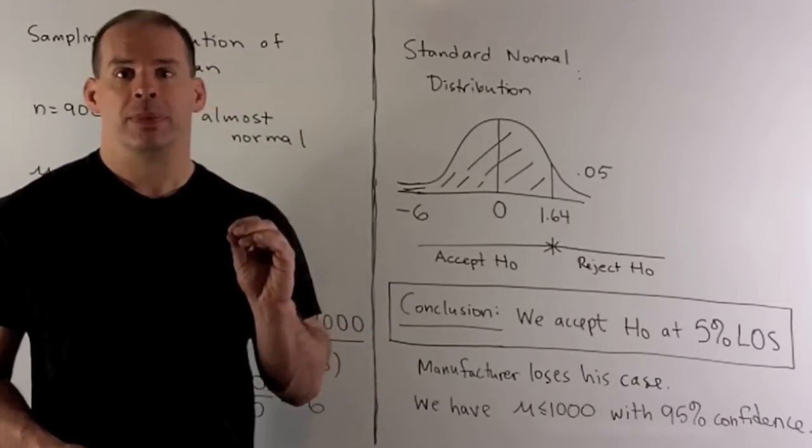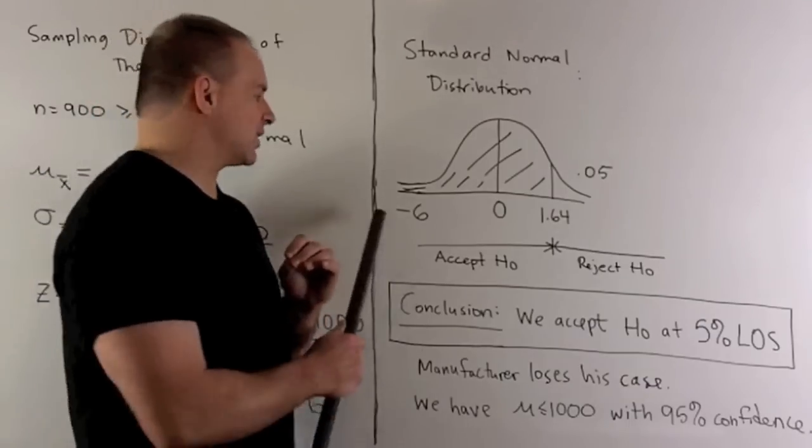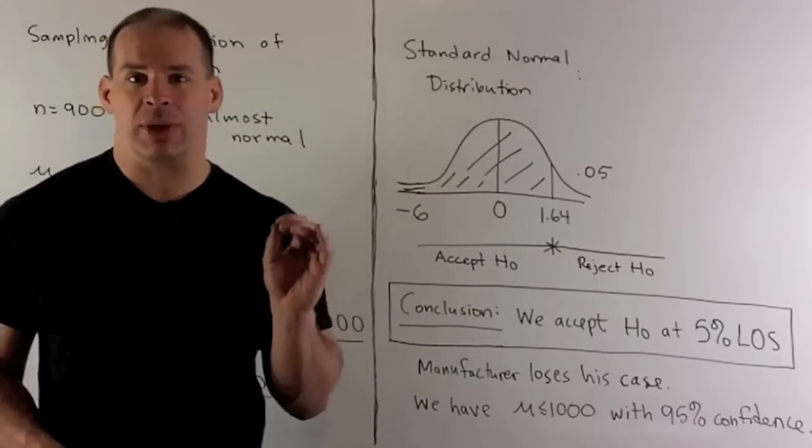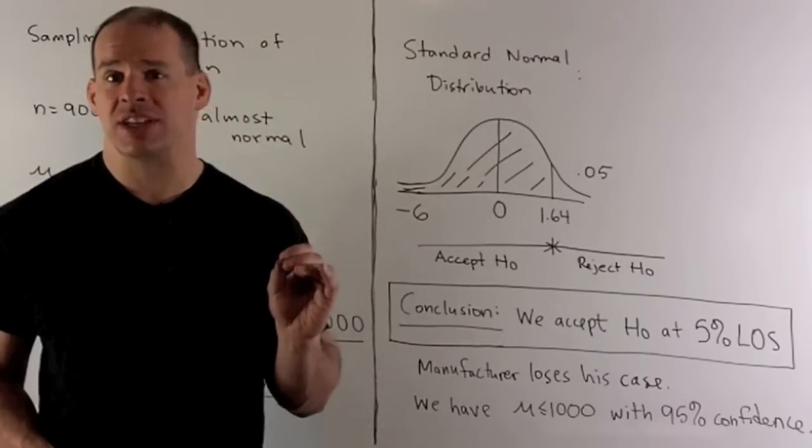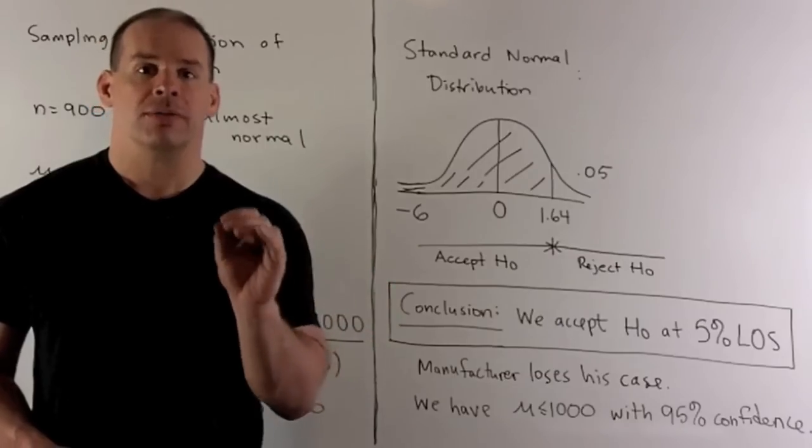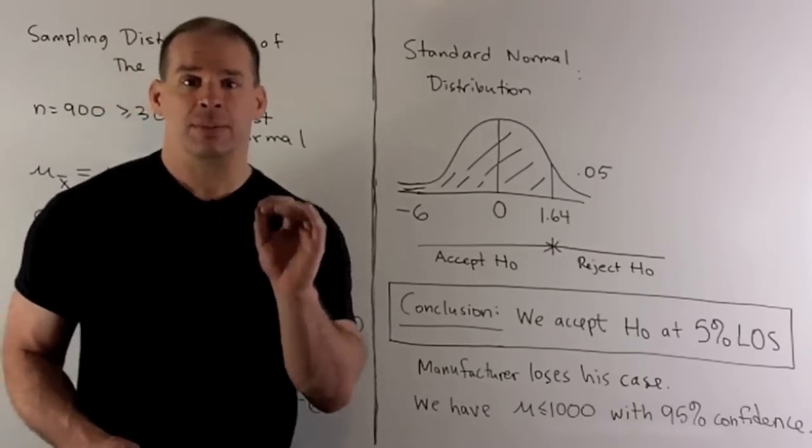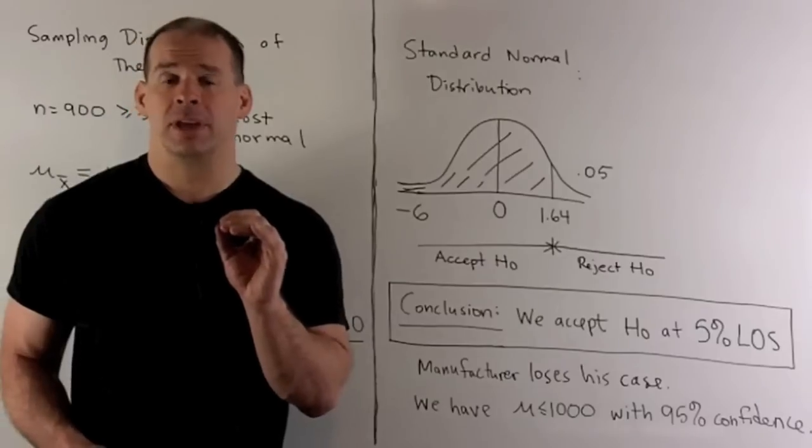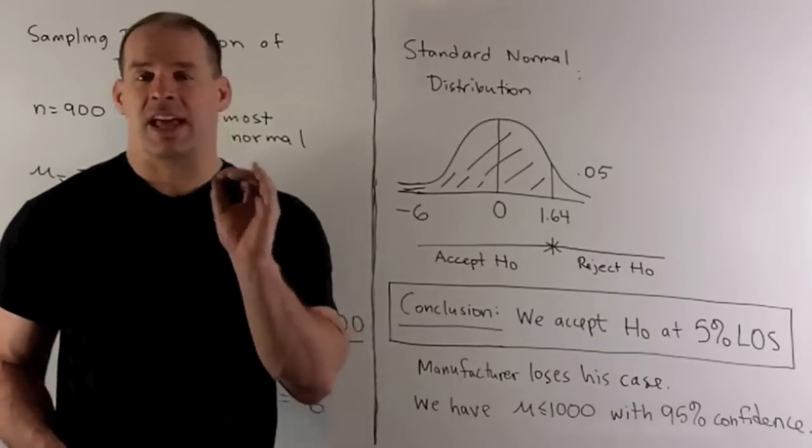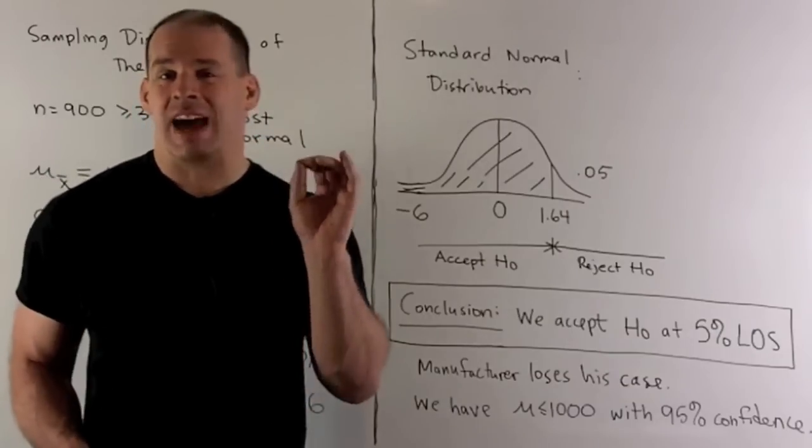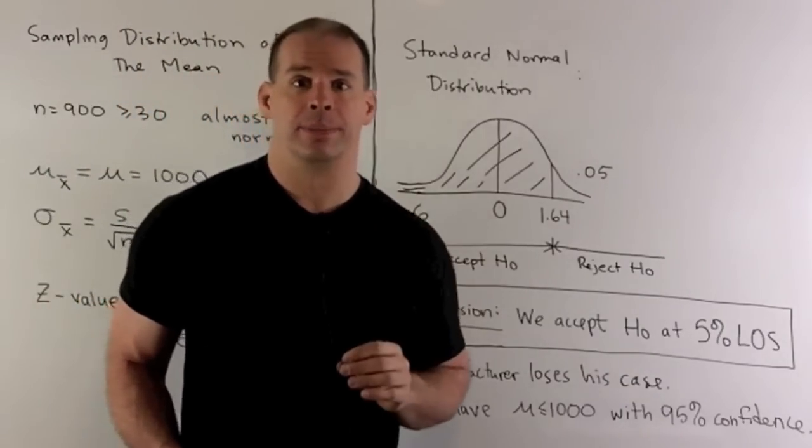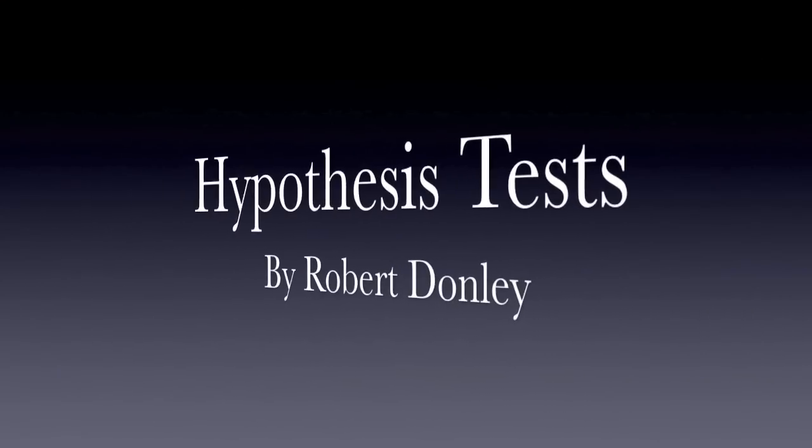Now for the sample that we just drew, we have z value is a minus 6. So we're well within the acceptance region. Our conclusion is that we accept the null hypothesis at a 5% level of significance. So for the manufacturer, this means that he loses his court case. The conclusion of the court is that mu is less than or equal to 1,000 with 95% confidence.